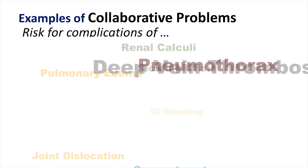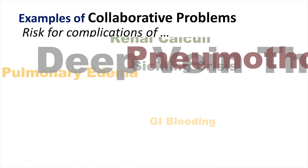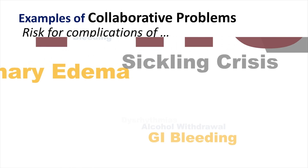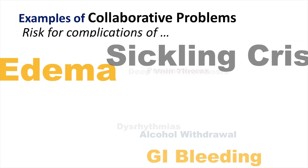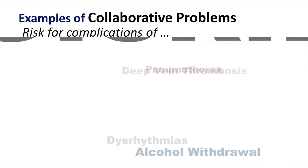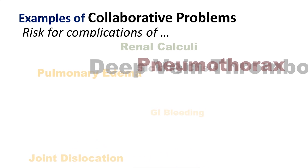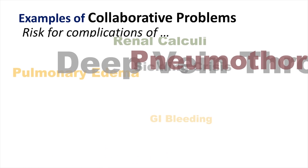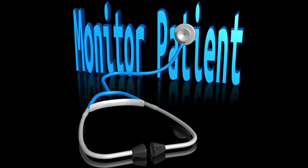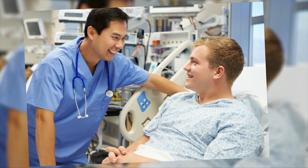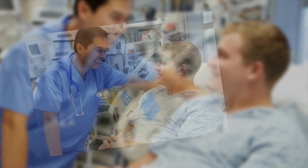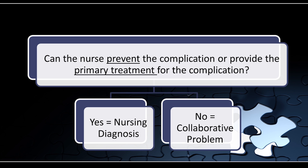Just like the name suggests, collaborative problems are treated collaboratively by both physicians and nurses working together, often in collaboration with other health care team members. In your nursing diagnosis handbook, they may be listed under associated nursing diagnoses or in a separate section. Nurses work to prevent collaborative problems from developing. When collaborative problems exist, nurses have the responsibility to monitor the patient's status, intervene or get the physician to intervene when necessary, and evaluate how effective interventions are. In short, nurses cannot treat collaborative problems independently. They do, however, monitor for and attempt to prevent these potential complications.